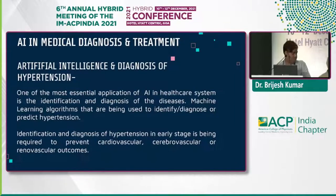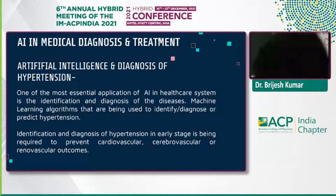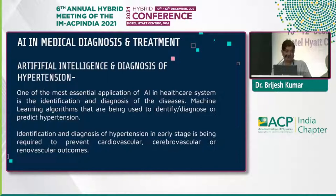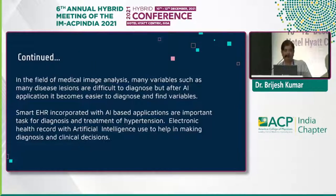The role of artificial intelligence in the diagnosis and treatment of hypertension: one of the most essential applications of artificial intelligence in the healthcare system is the identification and diagnosis of diseases. Machine learning algorithms are being used to identify, diagnose, or predict hypertension. Identification and diagnosis of hypertension in early stage is required to prevent cardiovascular, cerebrovascular, and renovascular outcomes. In the field of medical image analysis, many disease reasons are difficult to diagnose, but after AI applications, it becomes easier to diagnose and find barriers.